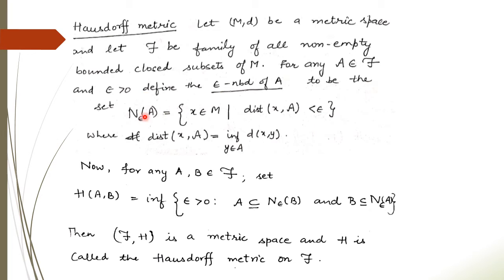The ε-neighborhood of A is defined using the distance from a point to a set: find the distances of point x with all points from A and take the minimum — that minimum is the distance of x from the set A. Whenever this distance is less than ε for such x belonging to m, the set of all those x forms the ε-neighborhood of A. Similarly, we can define the ε-neighborhood of B.